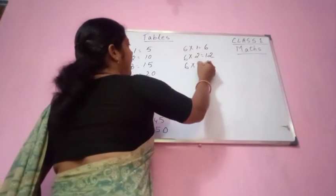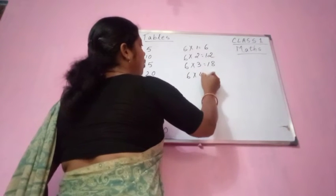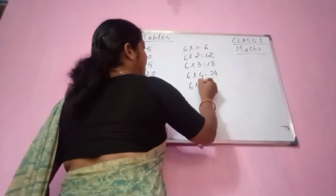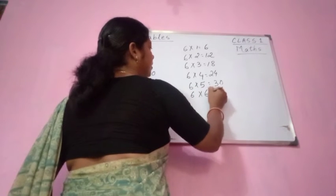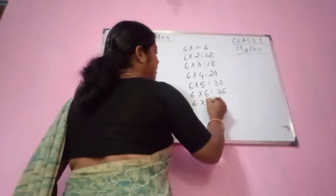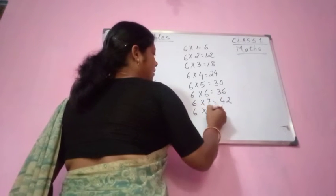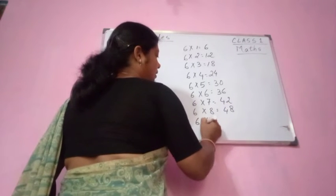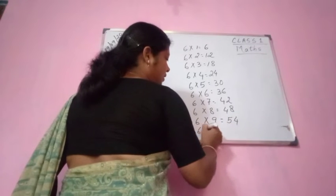6 threes are 18. 6 fours are 24. 6 fives are 30. 6 sixes are 36. 6 sevens are 42. 6 eights are 48. 6 nines are 54. 6 tens are 60.